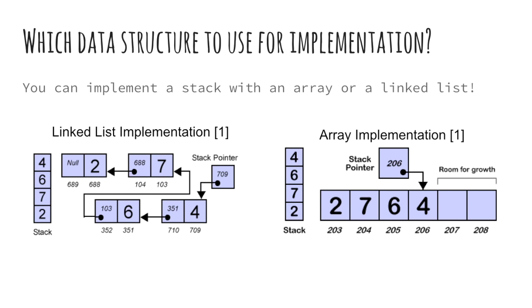So far, we have been discussing stack as an ADT, or abstract data type. We can have different concrete implementations of stack. For example, we can use sequential data structures such as arrays or linked list for implementation. The choice of data structure decides how the data is stored or accessed. For example, if we decide to use linked list for implementation, then we need to maintain a special pointer which will point to the topmost element.